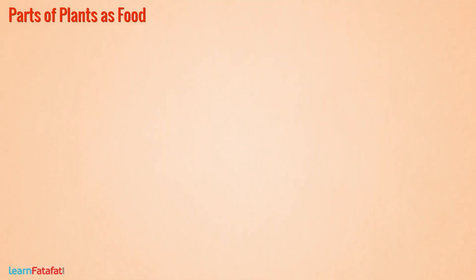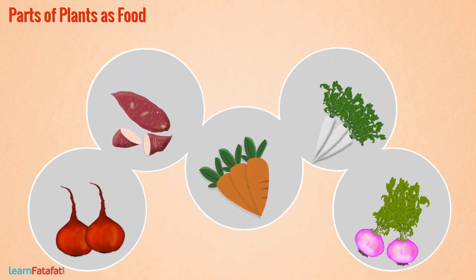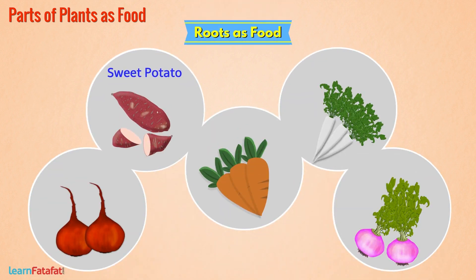We use different parts of plants as food. For example, we use roots of plants like sweet potato, carrot, radish, beetroot, turnip, etc. as food.